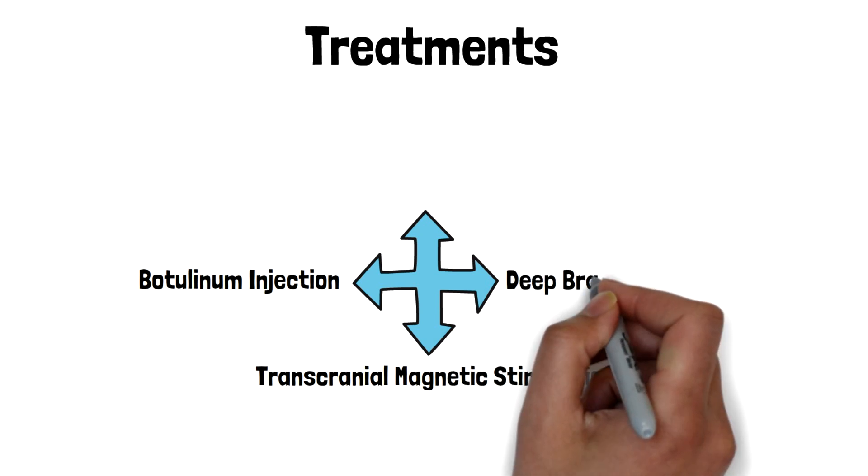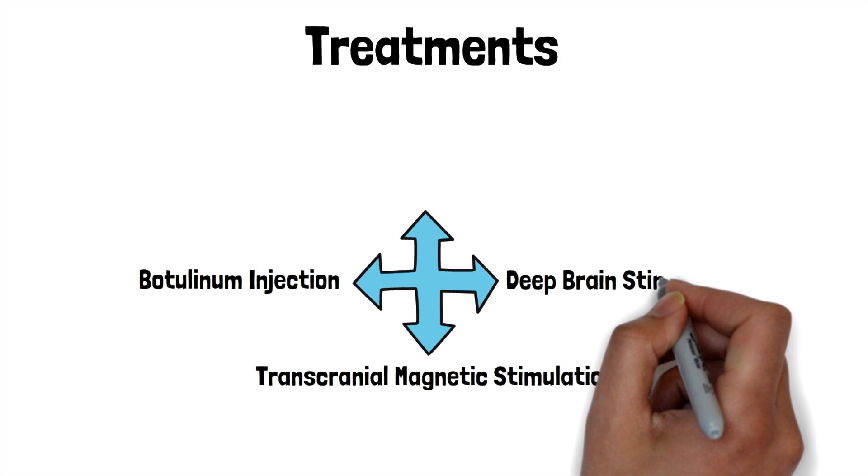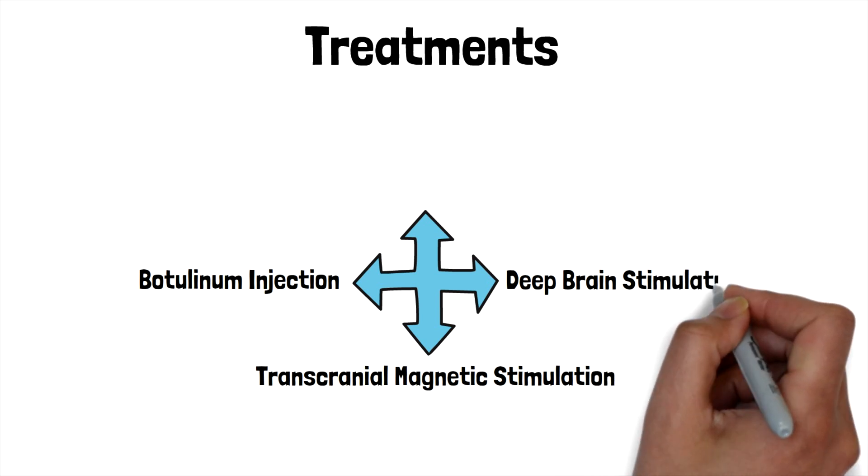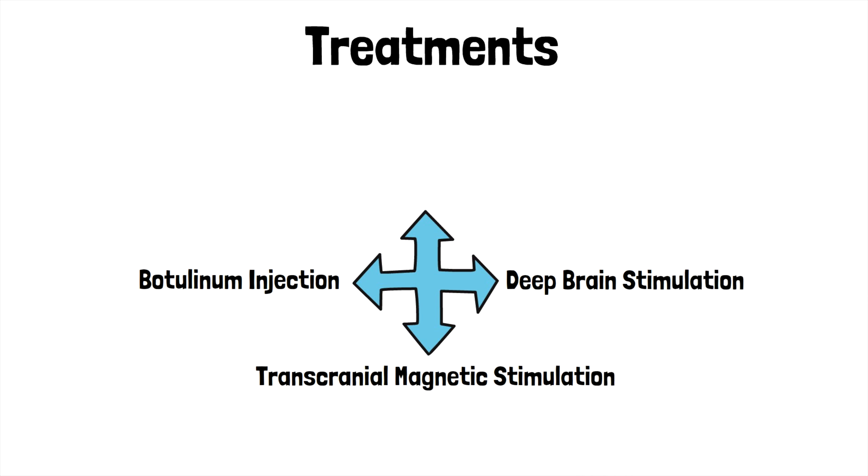Next, we have deep brain stimulation. This is the most commonly used surgical treatment for dystonia that results in extreme disabilities. This treatment involves the implantation of electrodes within the patient's brain. These electrodes are connected to a stimulator that is also surgically implanted into the chest. The electrodes within the brain transmit impulses that reduce the intensity of muscle contractions.